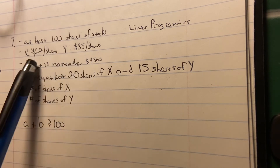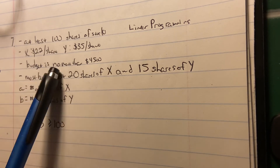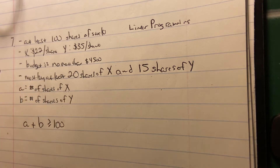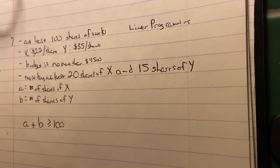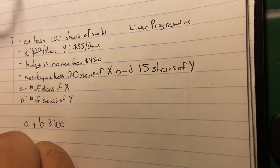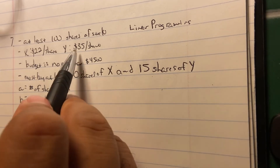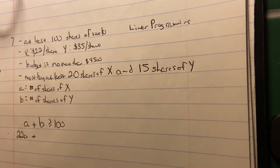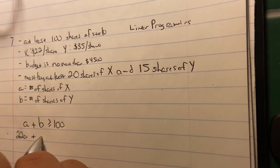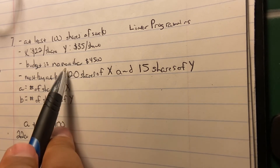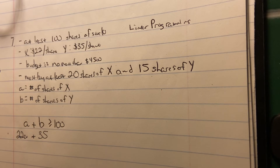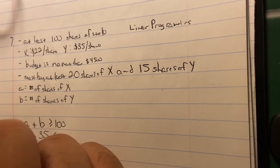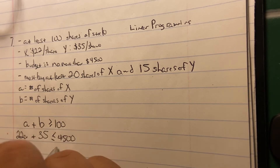Stock X is $22 per share and stock Y is $35 per share, and combined with the budget constraint, that gives you your next inequality. The total cost of stock X shares is 22A, and adding 35B — since $35 is the cost of one share of stock Y — gives you 22A plus 35B. Your budget is no more than $4,500, meaning less than or equal to $4,500.